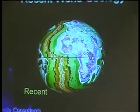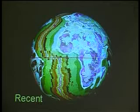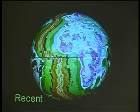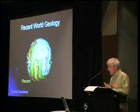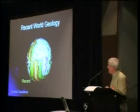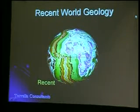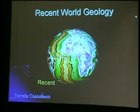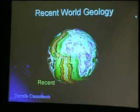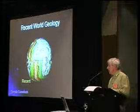The earth is a sphere, as we all know — not a flat map. This is the same data displayed in spherical format. As I mentioned, these volcanic rocks age away from the mid-ocean rift zone towards the continents. The oldest shown is the early Jurassic.